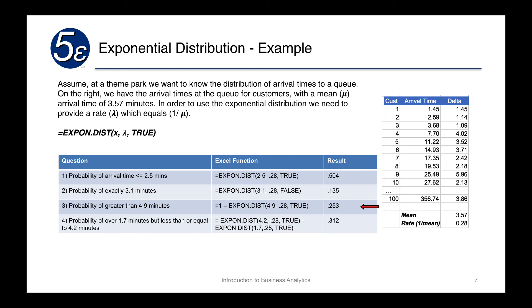For the probability of being greater than 1.7 minutes but less than or equal to 4.2 minutes, we use EXPON.DIST(4.2, 0.28, TRUE) minus EXPON.DIST(1.7, 0.28, TRUE). This subtraction gives us 0.312 — a 31.2 percent probability of an arrival time greater than 1.7 minutes but less than or equal to 4.2 minutes.